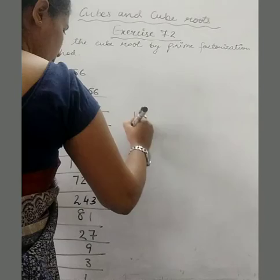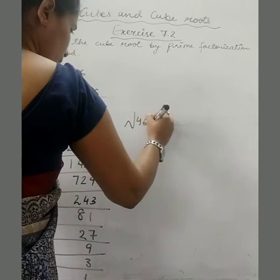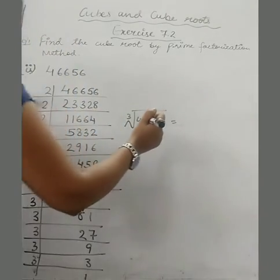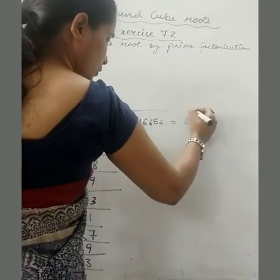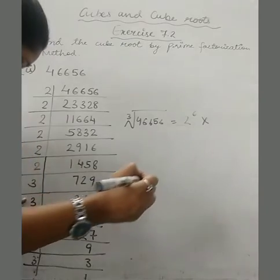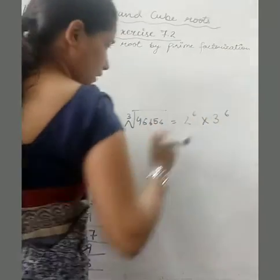What prime factors we got? 1, 2, 3, 4, 5, 6 into 1, 2, 3, 4, 5, 6. So it is 6 times.